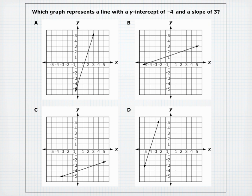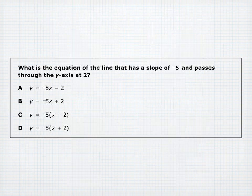Which graph represents a line with a Y-intercept of negative 4 and a slope of 3? Immediately eliminate B and D — they don't have a Y-intercept at negative 4. Among A and C, count the slope: only graph A has a slope of 3, so A is the answer. For 'what is the equation of a line with slope negative 5 passing through the Y-axis at 2': B, Y equals negative 5X plus 2, is correct.